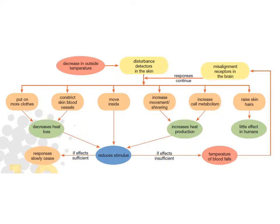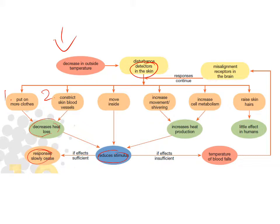Looking at a drop in external temperature detected by skin receptors, there are several responses. First, putting on more clothes decreases heat loss from the body, reducing the stimulus until the response ceases. Second, constricting blood vessels decreases heat loss, reducing the stimulus. If sufficient, it stops; if insufficient, the system signals again that we are not warm enough.